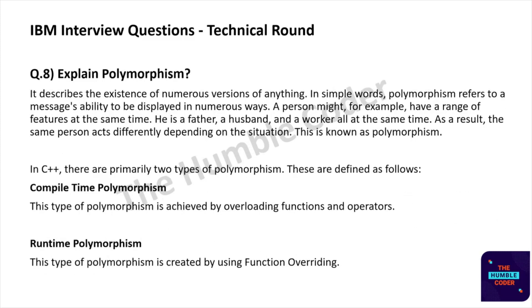The next question: explain polymorphism. Polymorphism describes the existence of numerous versions of something. In simpler words, it refers to a message's ability to be displayed in numerous ways. For example, a person might be a father, a husband, and a worker all at the same time, acting differently depending on the situation. This is polymorphism — 'poly' means many and 'morphism' means forms.